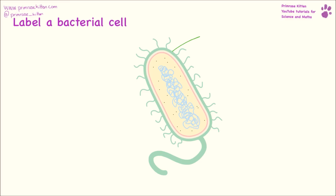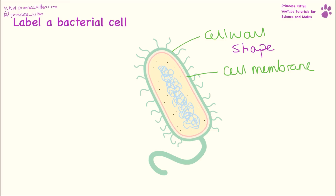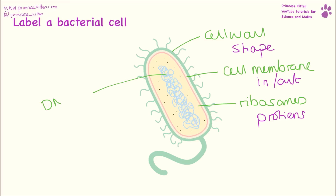Here is a bacterial cell. We have a cell wall, which is responsible for the shape. We have a cell membrane, which is responsible for stuff that goes in and out. We have our ribosomes, which again are for protein production. There is no nucleus in this because our DNA is kind of all squiggled around the middle. And then we have a flagella, which is responsible for movement.